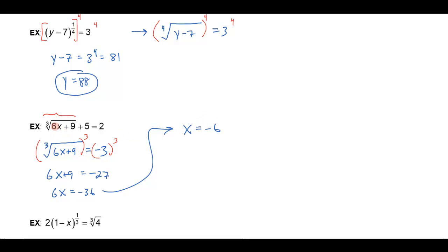Let's check and see if this works. If I plug negative 6 in here, I'd get a negative 36 here, plus 9 is negative 27, and the cube root of negative 27 is negative 3, and negative 3 plus 5 does equal 2. So that's going to check out for us.